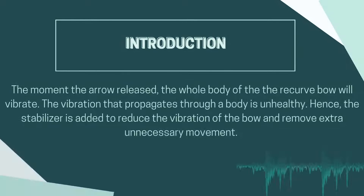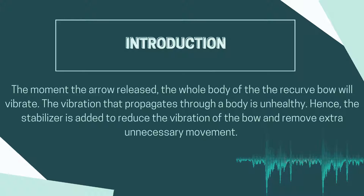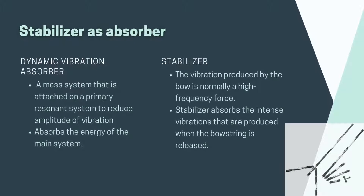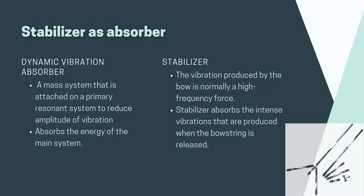As mentioned earlier, the moment the arrow has been released, the whole body of the recurve bow will vibrate, and that is what we are trying to prevent so that the arrow will fly in a smooth manner. A stabilizer acts as an absorber — basically, an absorber is a mass attached to one body that acts to reduce vibration as it absorbs the energy of the system. For the bow, the vibration produced is quite high, and the stabilizer will absorb the vibration after the arrow has been released.